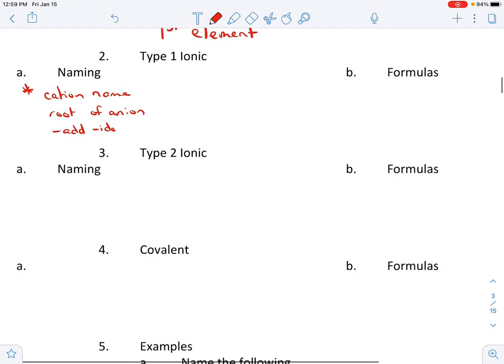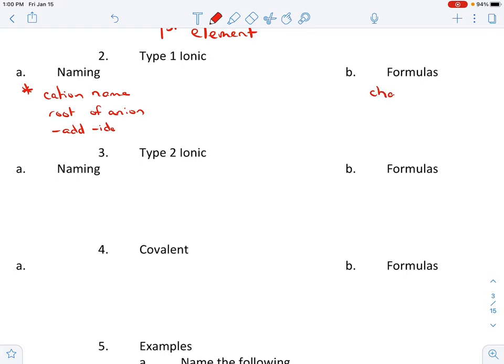When we write formulas for type one, all we have to do is we write their charges, right? We have charges and then we crisscross and reduce. Hopefully you remember this part and remember those charges. Remember those charges can be found above the groups on our periodic table, or they can be found in that table up above.